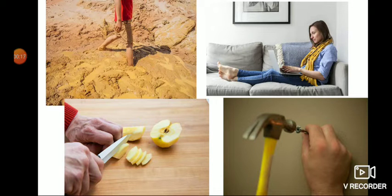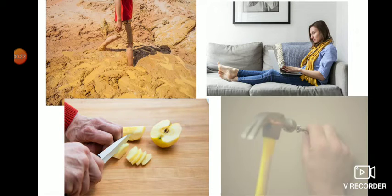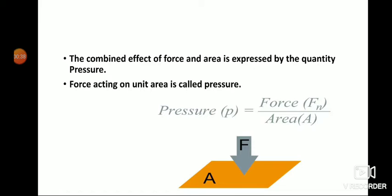When we walk on a muddy road, our feet sink. When we sit on a sofa, the sofa sinks. When we cut any fruit with a knife it becomes easier. And why is it easy to prick a sharp nail into a wooden board or wall? The answer is pressure — the combined effect of force and area.